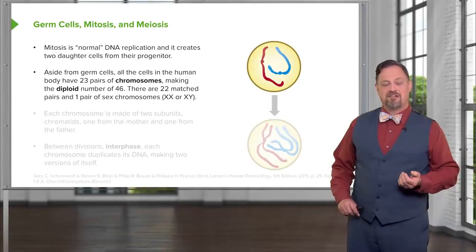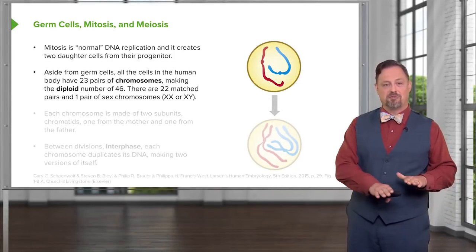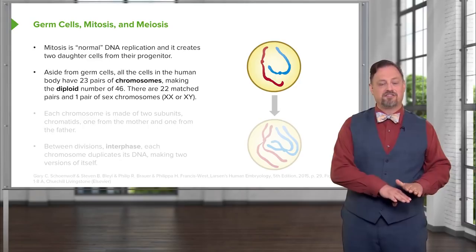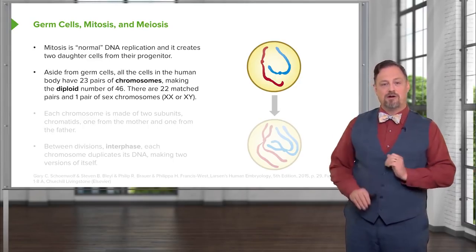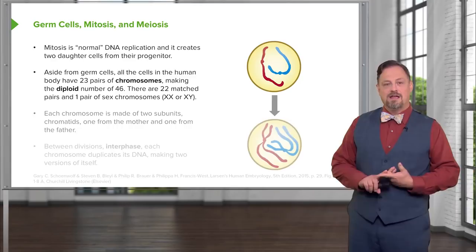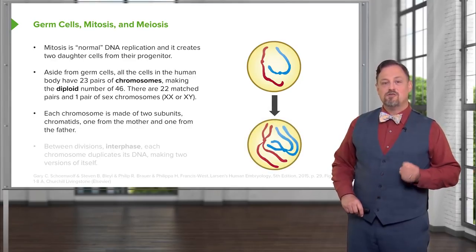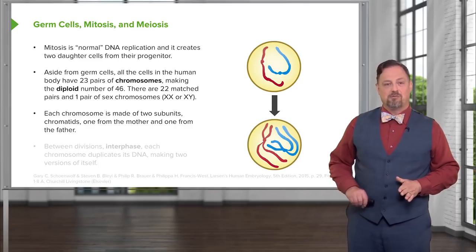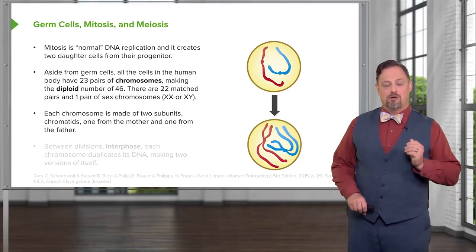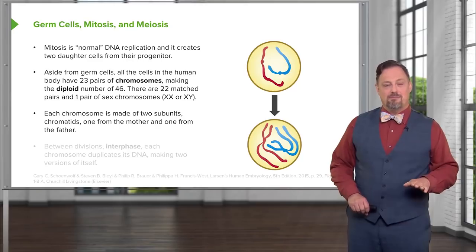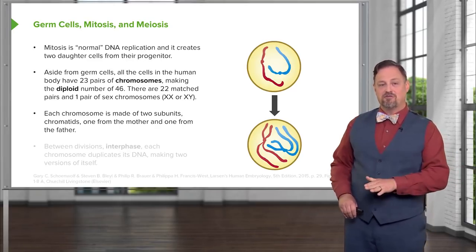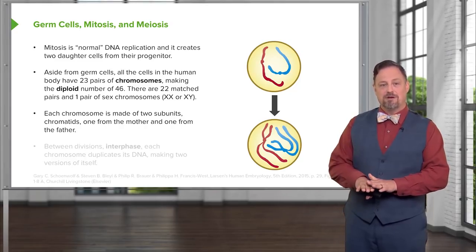Twenty-two of those are matched pairs, meaning chromosome 2 is matched with chromosome 2, and we have one pair of unmatched chromosomes called sex chromosomes which are either XX in the case of a genetic female or XY in the case of a genetic male. Each chromosome is made of two subunits called a chromatid, one that comes from the mother and one that comes from the father. So we're going to have chromosome 2 with a maternal and paternal chromatid and we'll have its paired chromosome 2 with another maternal and paternal chromatid.